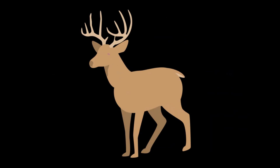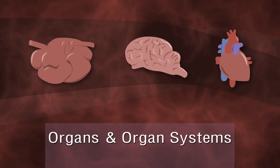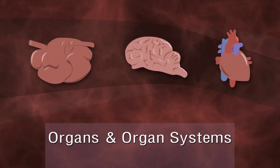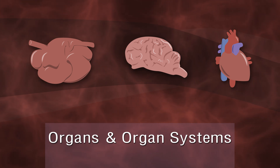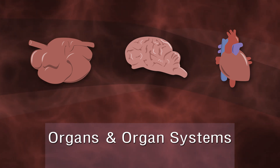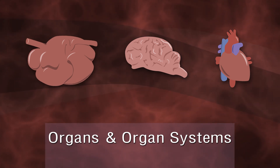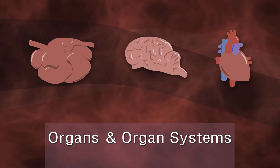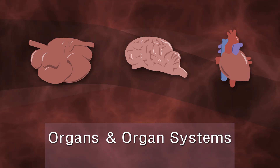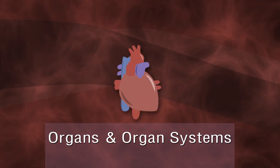The structure of life continues to unfold as we reach the next level of organization: organs and organ systems. Organs and organ systems are defined as body parts that carry out a particular function. Specific examples of organs and organ systems include the stomach, brain, and heart of a deer.